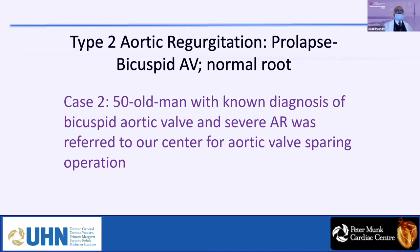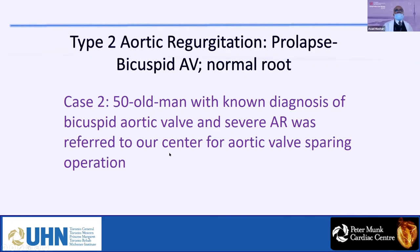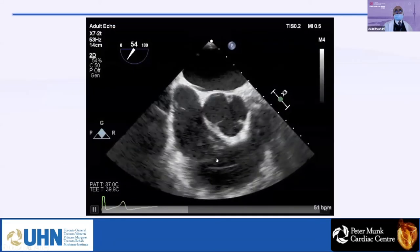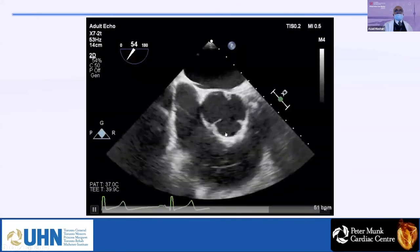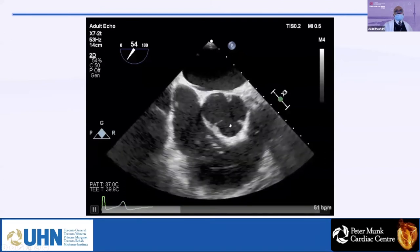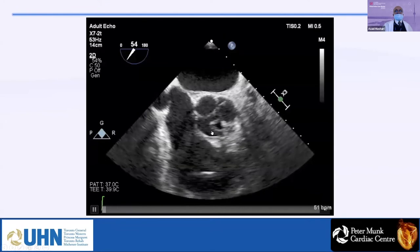Case number two is a prolapse of the bicuspid aortic valve with a normal root — a somewhat more difficult scenario. A 50-year-old man with known bicuspid aortic valve and severe AR was referred for aortic valve-sparing operation. This is a bicuspid aortic valve where the raffae is between the right and left cusps — the most common form. The non-coronary cusp is better called the non-fused cusp; the conjoined cusp is the fused one.